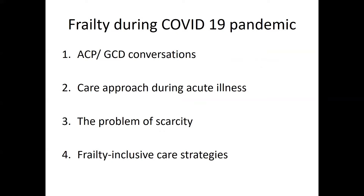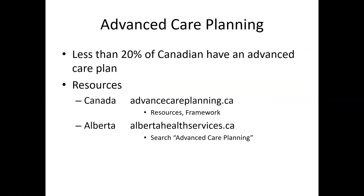I want to spend the rest of the time on advanced care planning and goals of care designation conversations; care approaches during acute illness; the problem of scarcity; and frailty inclusive care strategies. Unfortunately, less than 20% of Canadians have an advanced care plan in place. Advanced care plans are so much more than a goals of care designation — they are based on full conversations about a person's values and how they want their life to play out.